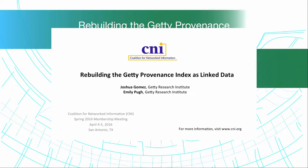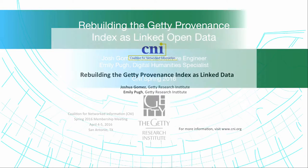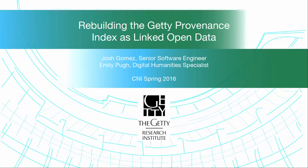I'm Joshua Gomez, I work at the Getty Research Institute as a software engineer. And this is Emily Pugh, she's our digital humanities specialist. We're undertaking a big task at the research institute to rebuild a 30-year-old software system known as the Provenance Index.